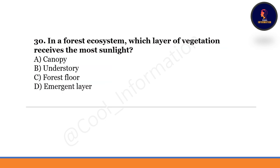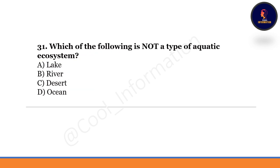In a forest ecosystem, which layer of vegetation receives the most sunlight? The correct option is option A — the canopy is the layer of vegetation that receives most of the sunlight.